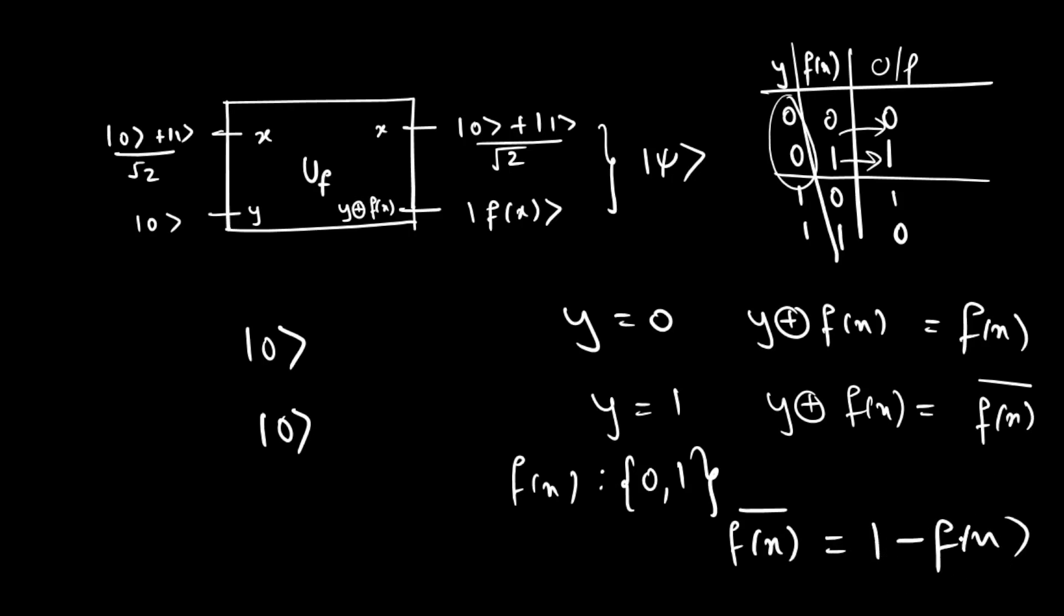That is for f(x) equal to 0, 1 minus 0 will be 1. So for f(x) = 0, f(x) complement will be 1. And similarly for f(x) = 1, f(x) complement will be 0. So now let's see the operation of U_f transformation on x and y.